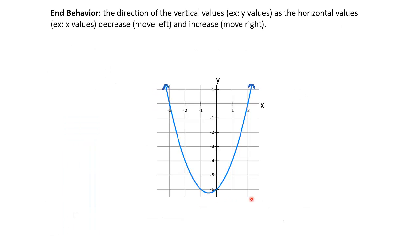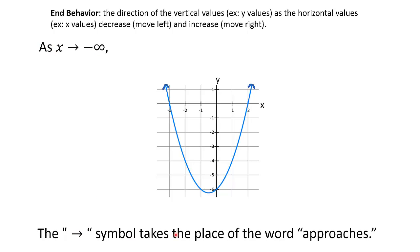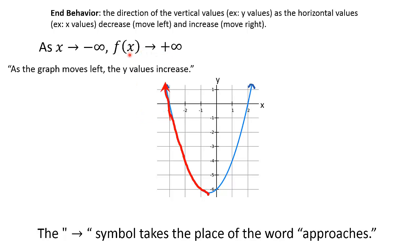End behavior is the description of the vertical values, often the y-values. That means we want to figure out what's happening to those as we go to our left and as we go to the right, or as x approaches negative infinity, or as x approaches positive infinity. We can write: as x approaches negative infinity — remember that arrow is just another symbol for the word 'approaches' — what is our y-value doing? As we go to our left, our y-values are increasing, so we can say that f(x) is approaching positive infinity. Remember that f(x) is referring to the y-values.